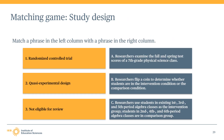We have a matching game to help you practice what you've learned. You will match a phrase in the left column with a phrase in the right column. The first phrase in the left column is randomized controlled trial. The answer is B: researchers flip a coin to determine whether they are in the intervention condition or the comparison condition. This is correct because it describes a completely random process.